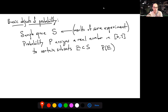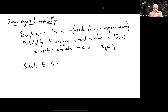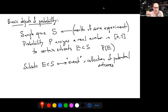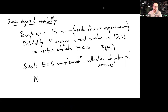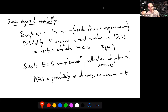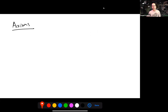We assign probabilities by mapping particular subsets E of our sample space to numbers P(E) in the range zero to one. We think of these subsets as events — they are collections of potential outcomes of our experiment which happen to give a result in that subset E.